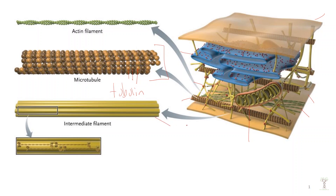The next structure is called intermediate filaments, and they act like the framing of a house or scaffolding — they help organelles stay in the right place. There are many different kinds of proteins that make up intermediate filaments, but one you may have heard of is called keratin. Keratin is the protein found in your skin and hair that gives them their hardness.